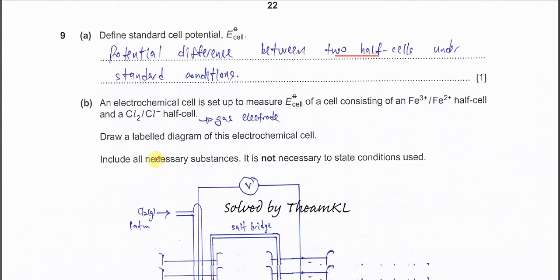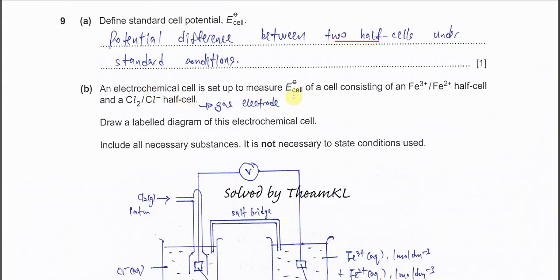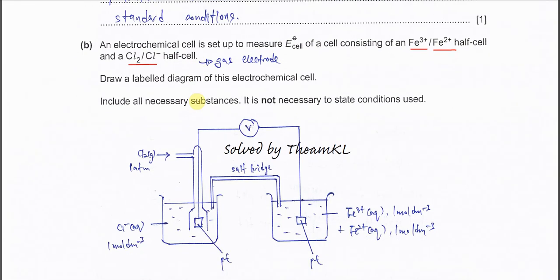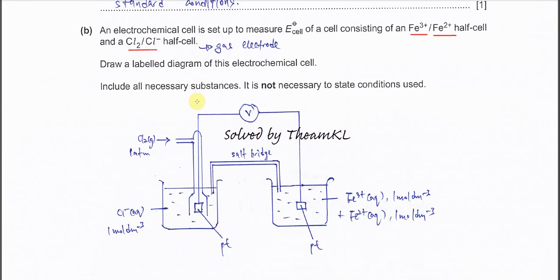Part B: An electrochemical cell is set up to measure the E°cell of a cell consisting of Fe³⁺ and Fe²⁺ half-cell and the chlorine and chloride half-cell. This is a gas electrode. Draw a labeled diagram for this electrochemical cell. Include all the necessary substances. It is not necessary to state conditions used.